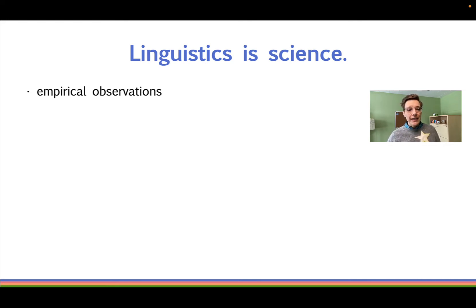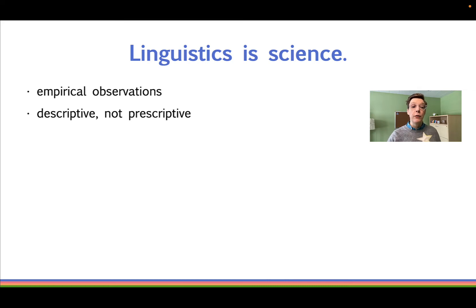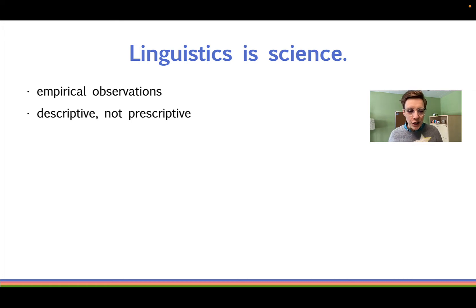Of course, like all scientists and like all humans, linguists have biases that often prevent us from reaching this ideal — more on that later in the book. But the goal for doing language science is to do so with a descriptive approach to language, not a prescriptive approach: to describe what people do with their language, but not to prescribe how they should or shouldn't do it.